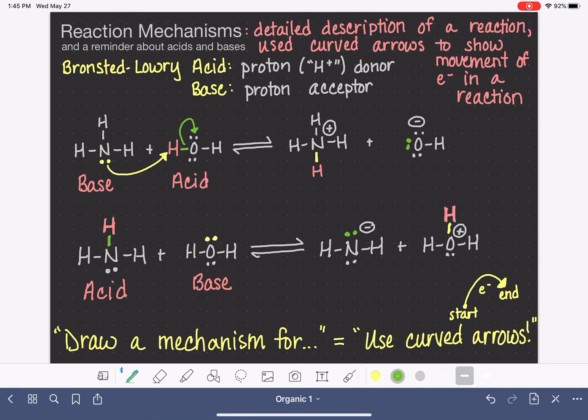So how will we represent that? We'll start our curved arrow at the bond because that's where they start. And we will end the curved arrow on the nitrogen because they are ending up a lone pair on the nitrogen.